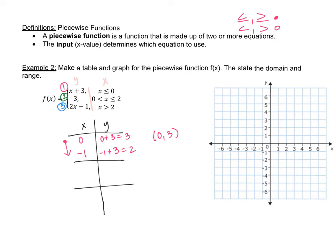So I have coordinates at (0, 3) and (−1, 2). When I graph it, at zero three I plot a closed circle. The next coordinate is at negative one two, and because I chose negative one I have an arrow. I connect the dots and draw an arrow pointing in that direction. You can also extend this further down if you wanted to — it just depends on what number you chose. So that line could keep going further down.